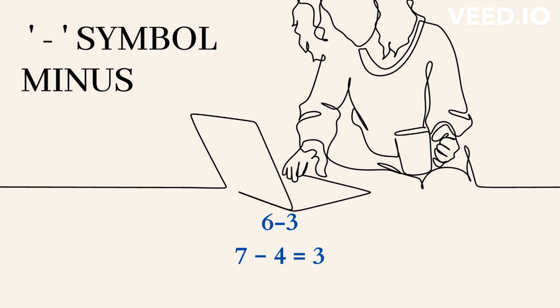4 from 7 is or leaves 3. Informal. 7 take away 4 is or leaves 3. Informal. 7 minus 4 equals or is 3. Formal.